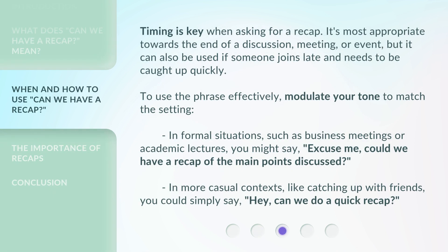Timing is key when asking for a recap. It's most appropriate towards the end of a discussion, meeting, or event, but it can also be used if someone joins late and needs to be caught up quickly. To use the phrase effectively, modulate your tone to match the setting. In formal situations, such as business meetings or academic lectures, you might say, 'Excuse me, could we have a recap of the main points discussed?' In more casual contexts, like catching up with friends, you could simply say, 'Hey, can we do a quick recap?'